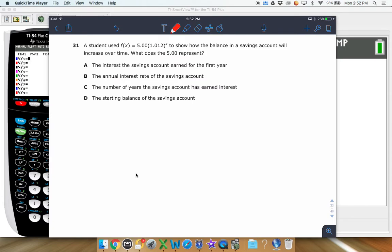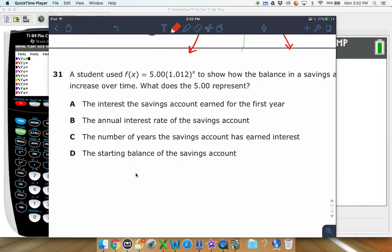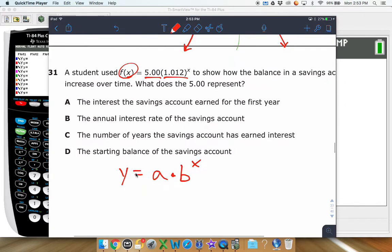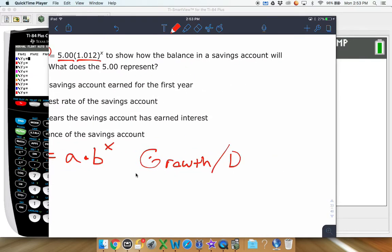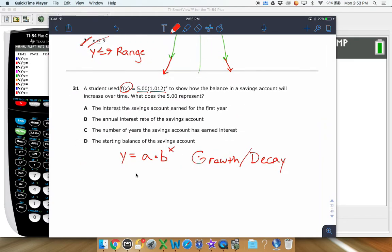Alright, this next one here, we're talking about a student used this graph 5 times 1.012 raised to x to show how the balance in a savings account will increase over time. What does the 5.0 represent in this situation? So right away I notice here, f(x) is kind of like y. This is like one of your equations where it has something that you're multiplying together, but then that thing you're multiplying by is being raised by something. So I already kind of automatically know this is a growth, or you could even say a decay type of situation.